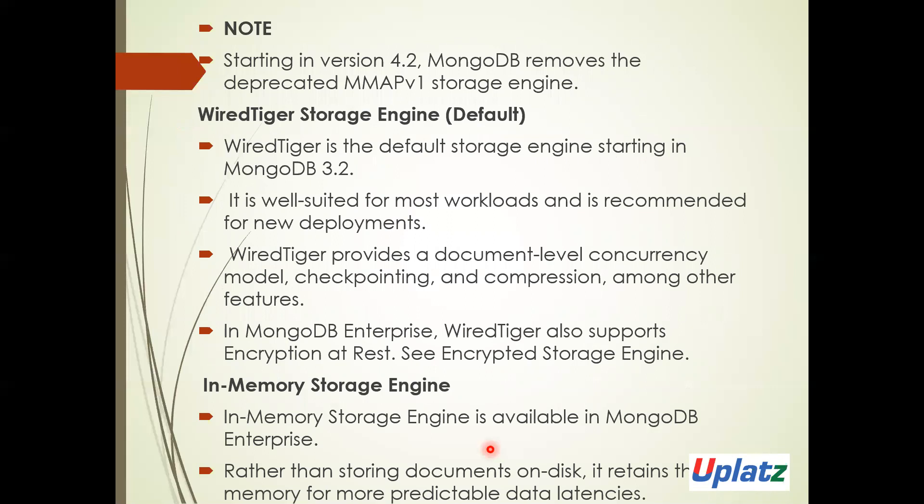WiredTiger is the default storage engine, suitable for all workloads and recommended for new deployments. It provides document-level concurrency, checkpointing, compression, and also supports encryption and decryption. The MMAP storage engine (used before version 4.2) retains data in memory for predictable data latency rather than storing to disk.